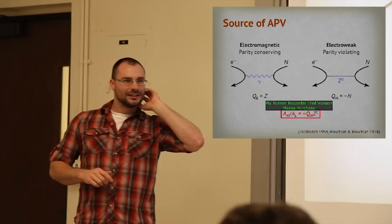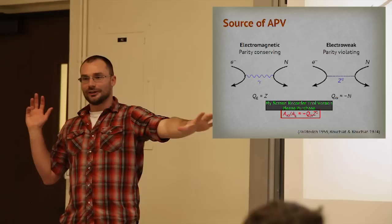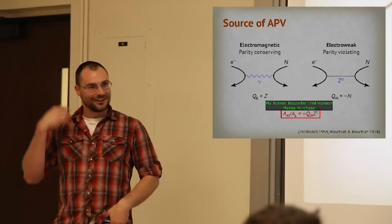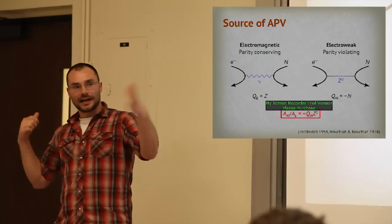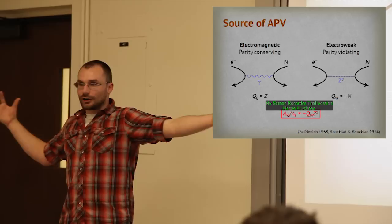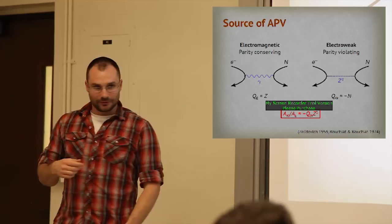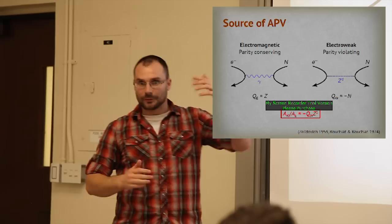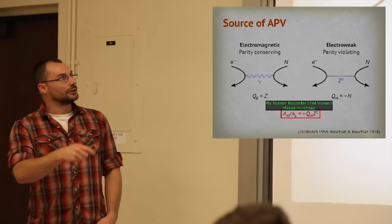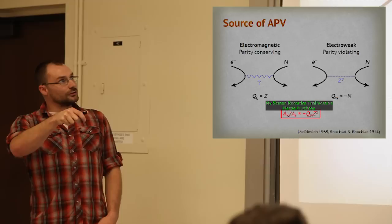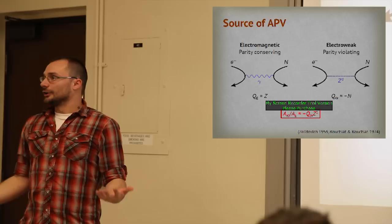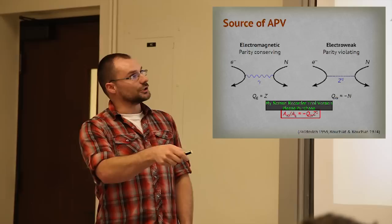To explain virtual particle exchange: me and Rylan are two electrons — we're going to repel each other. I throw a snowball at him, I recoil back, he catches it and recoils back. If I keep throwing snowballs, we eventually repel each other. That's the idea of virtual particle exchange. The electromagnetic force is photon exchange between electrons and nucleons — this conserves parity. The electroweak force, by analogy, is electrons exchanging a Z0 boson instead of a photon with the nucleons. Just as we talk about the electric charge of the nucleus scaling like the number of protons, we talk about the weak charge scaling roughly like the number of neutrons.